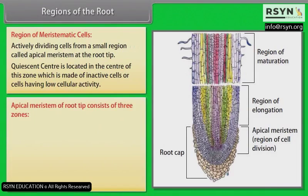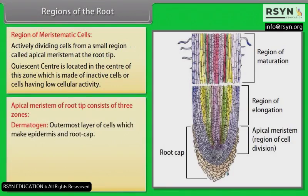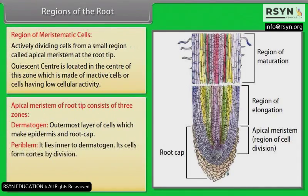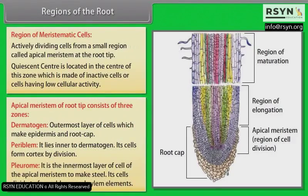Apical meristem of root tip consists of three zones: Dermatogen — the outermost layer of cells, which make epidermis and root cap. Periblem — it lies inner to dermatogen, and its cells form cortex by division. Plerome — it is the innermost layer of cells of the apical meristem to make stele; its cells divide to form phloem and xylem elements.